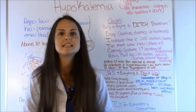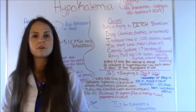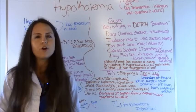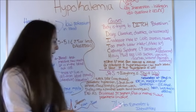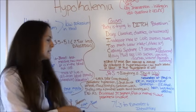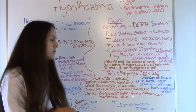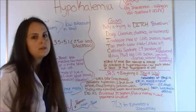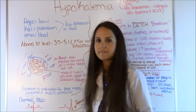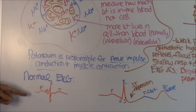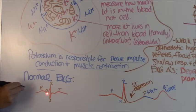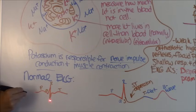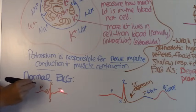And EKG changes — pay close attention to this because this is another NCLEX favorite and professor favorite question to ask you about what you're going to see different on an EKG when a patient has a really low potassium level. You're going to see a depressed ST segment, a flat or inverted T wave, and a prominent U wave. Let me show you what a normal EKG looks like first. On your PQRS complexes, you have a P wave — this little hump. Then you have the Q wave — that little dip. Then you have the R, which is that spike, and then it goes down into the S, and then you have the T wave.